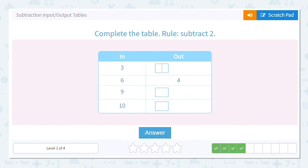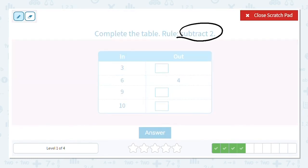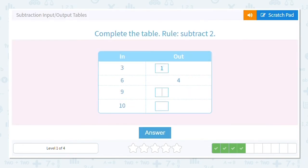All right, next one. This time we are subtracting 2. And we check right here, 6 minus 2 does equal 4. So every time we are subtracting 2. 3 minus 2 equals 1. 9 minus 2 equals what? 7. 10 minus 2 equals 8. Good job.